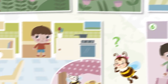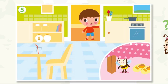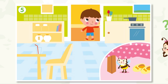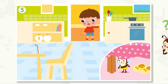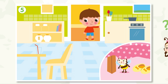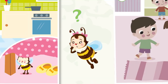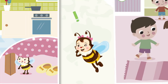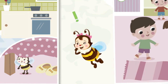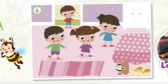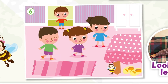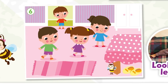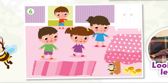5. Where's Busy Bee? Is she in the kitchen? No. Where is she? 6. She's in the bedroom. She's under the bed.